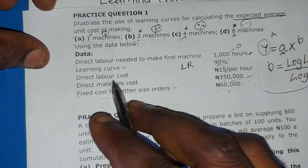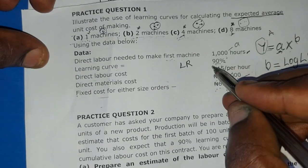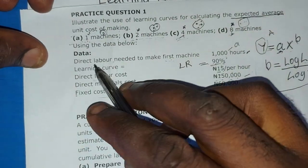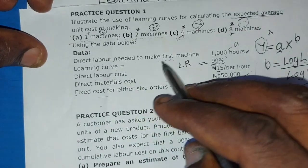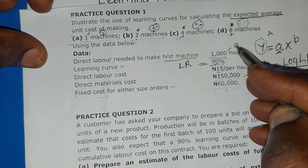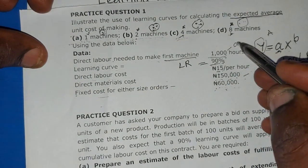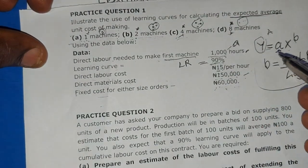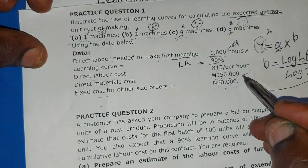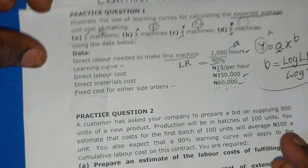We are told that our direct labor cost is 15 Naira per hour. The learning rate here is 90%. The direct labor needed to make the first machine is 1,000 hours, and that is represented by A in the calculation. Our direct material cost is 150,000, and our fixed cost is 60,000.